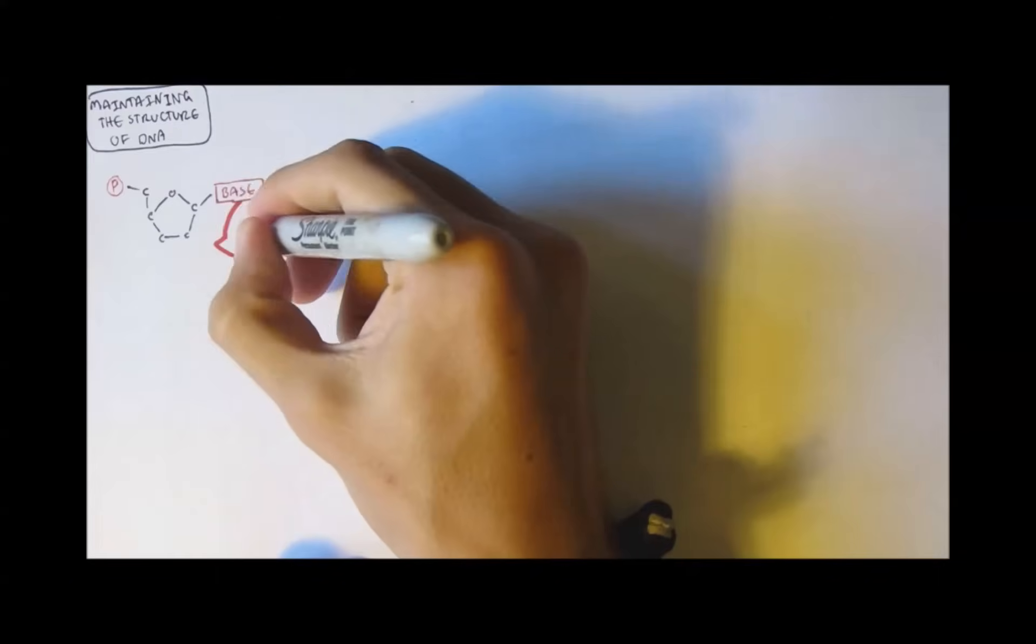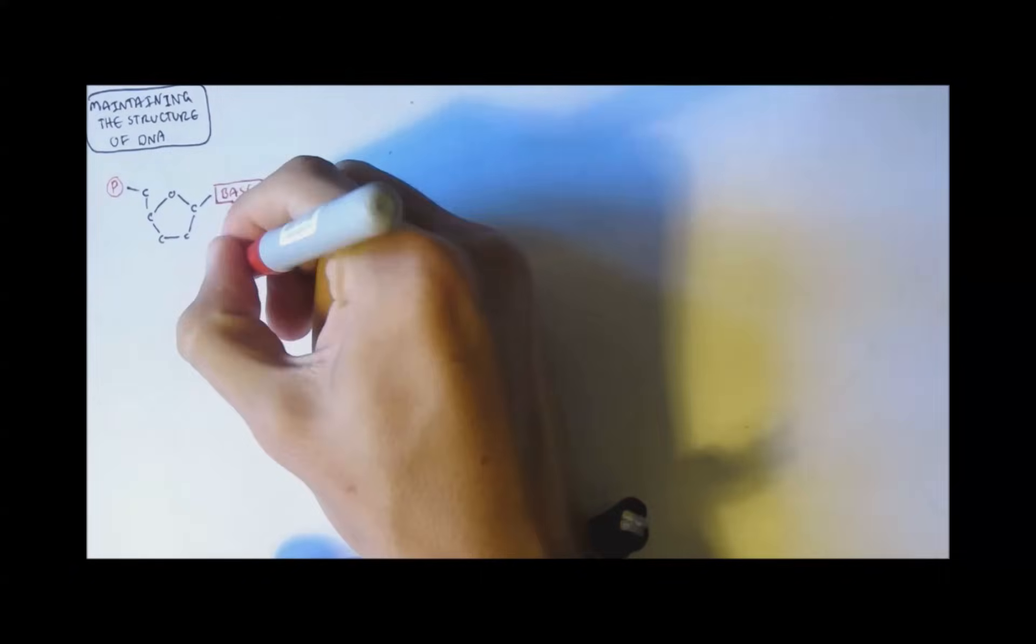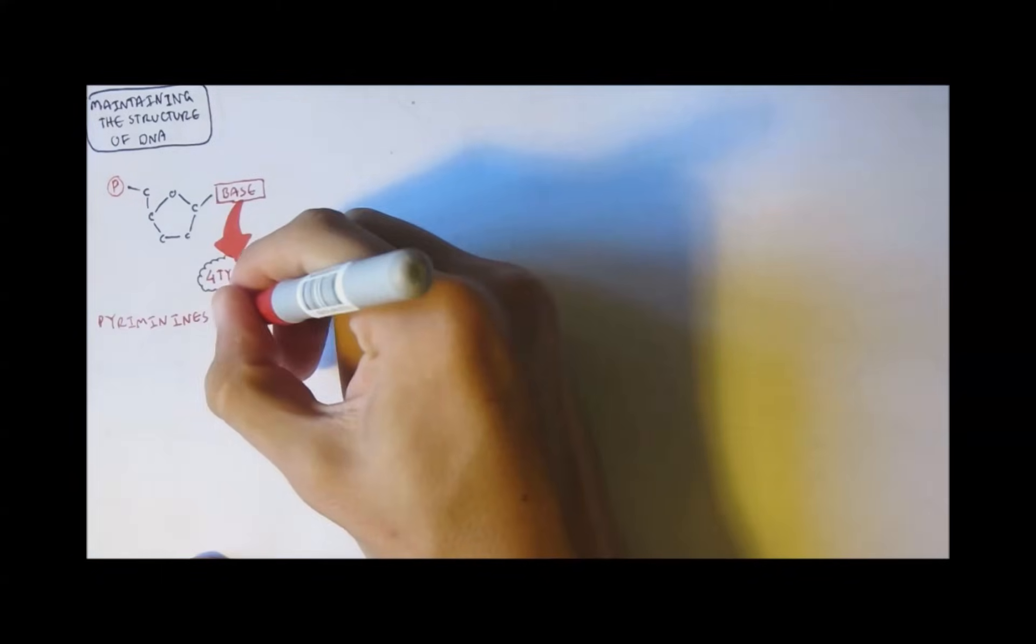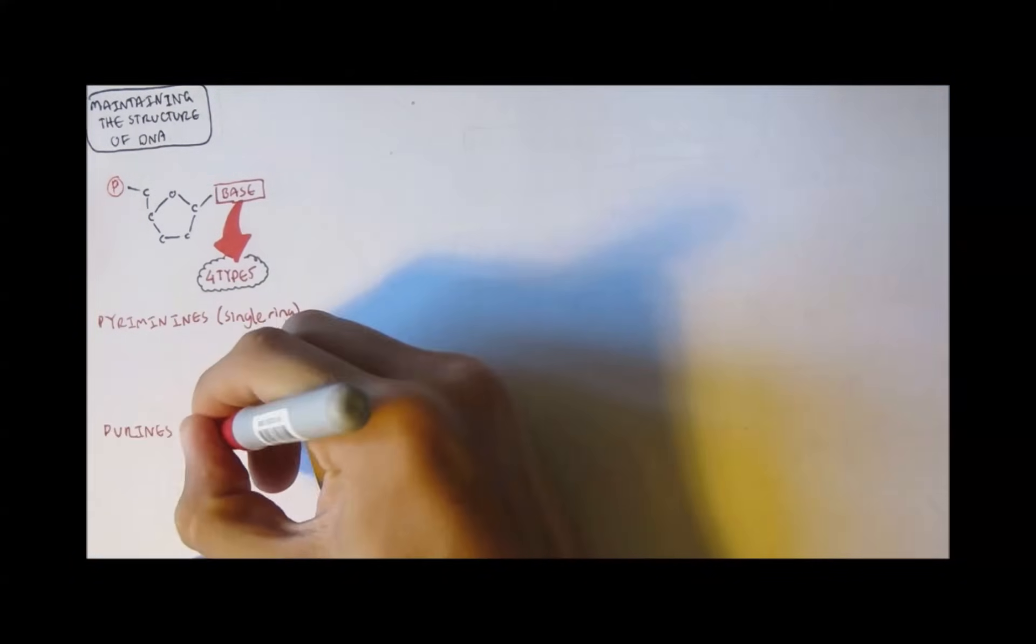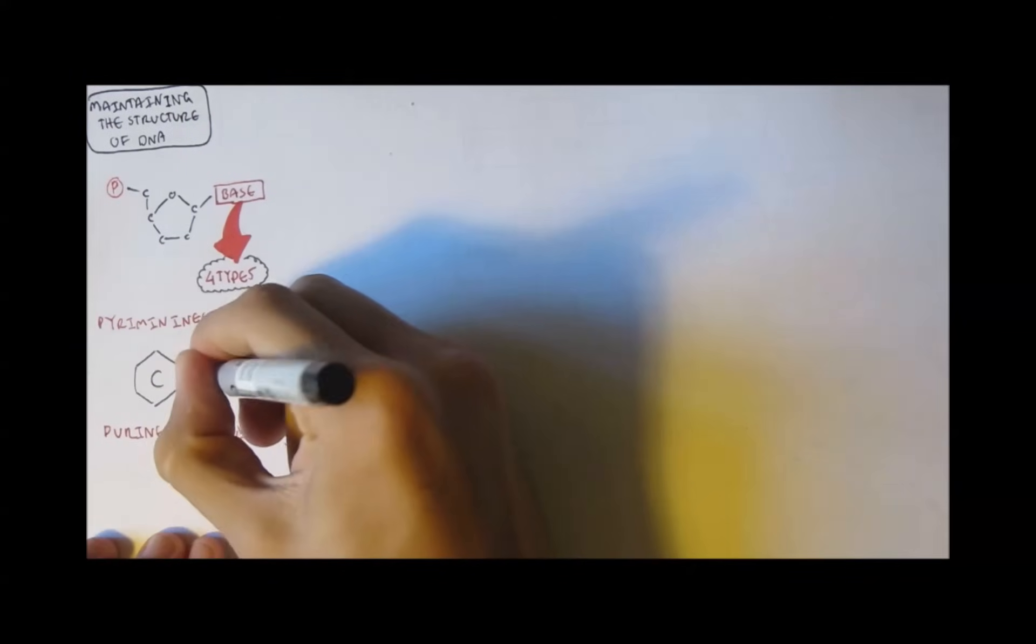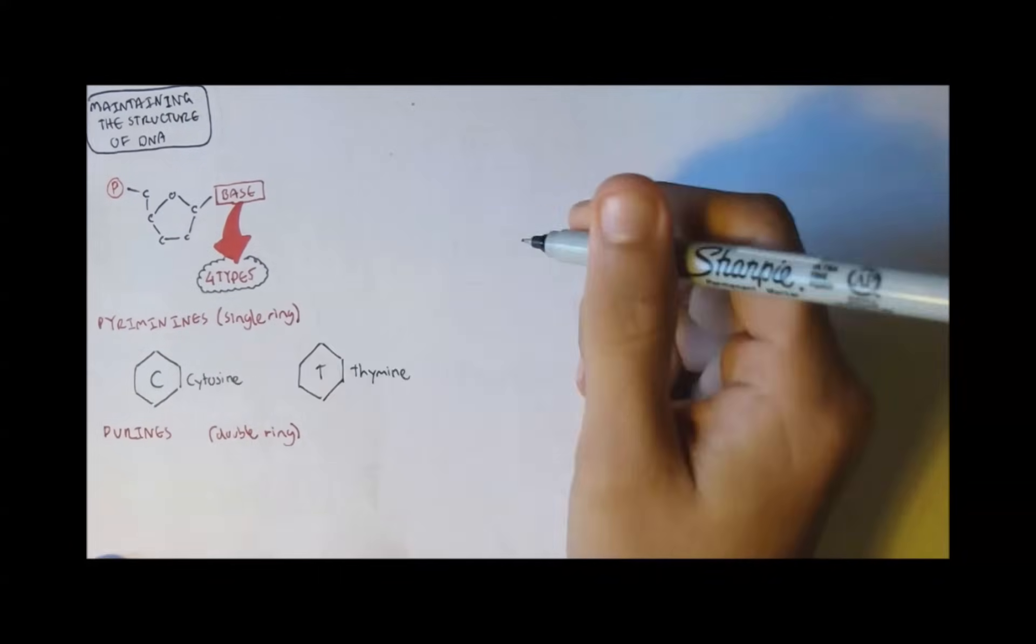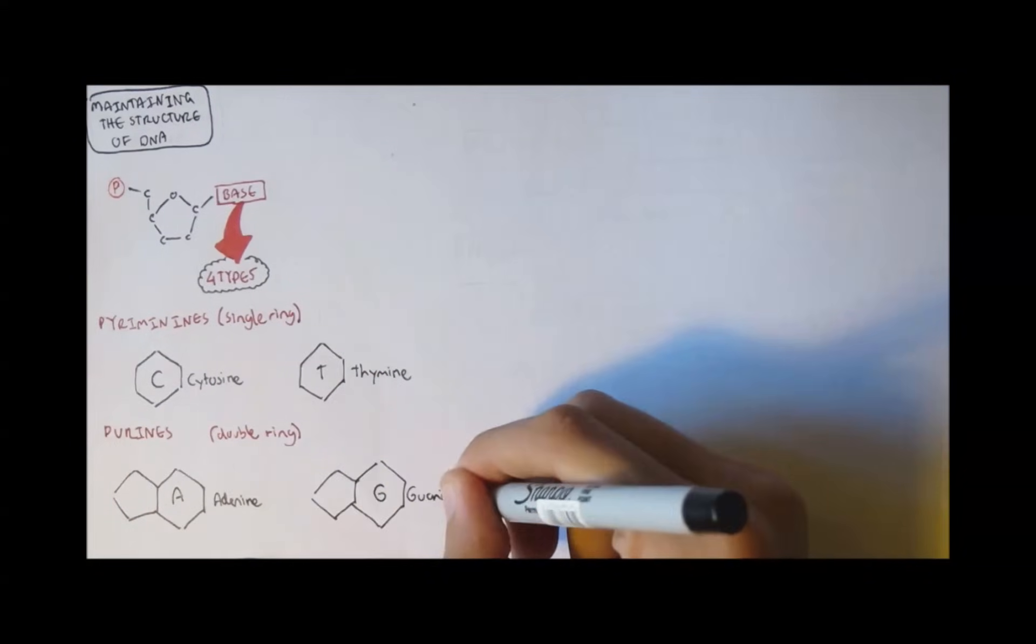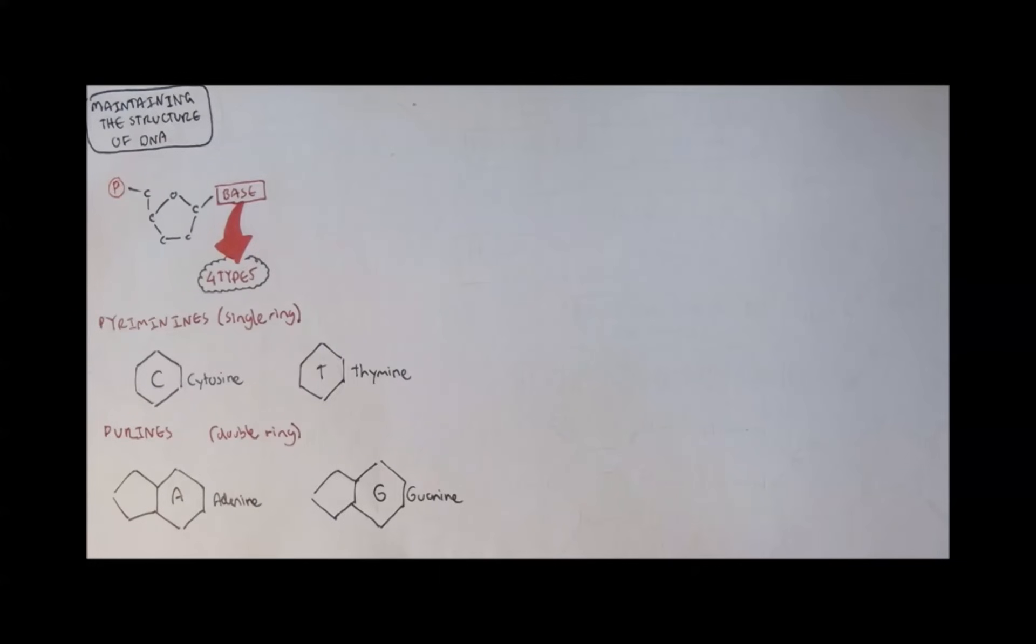Now it's important to remember that there are four types of bases in DNA and can be divided into two groups. Group number one are the pyrimidines, which are the single ring bases. And there's also the purines, which are the double ring bases. Pyrimidines consist of C for cytosine and T for thymine. And the purines consist of A for adenine and G for guanine. Adenine binds with thymine and cytosine binds with guanine in a double-stranded DNA structure.